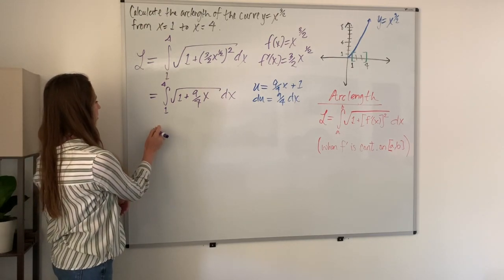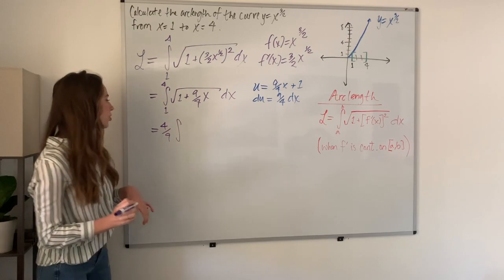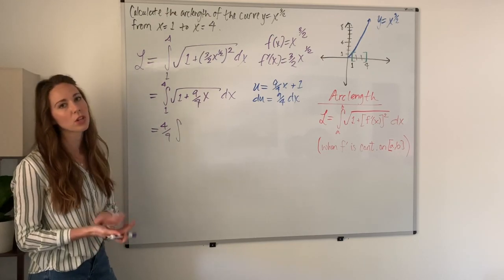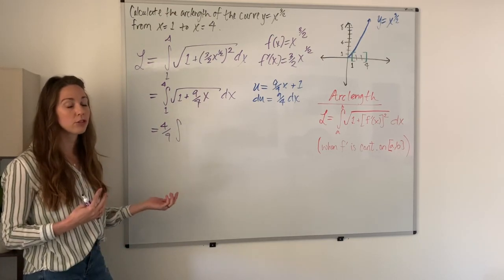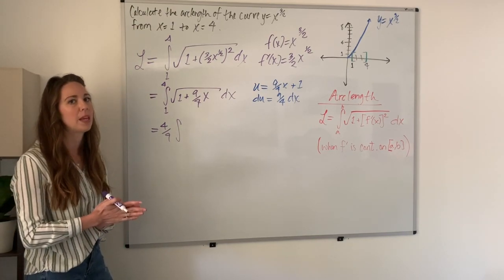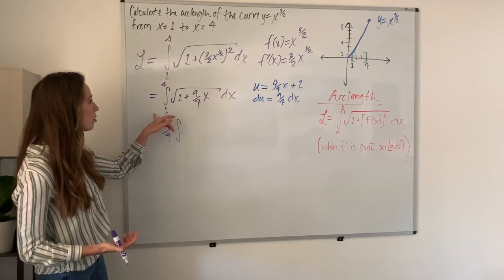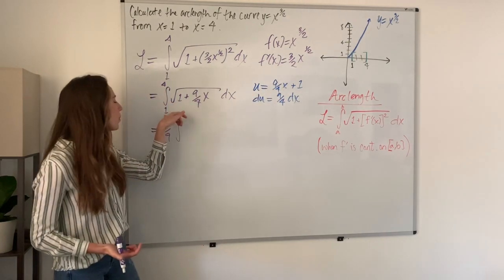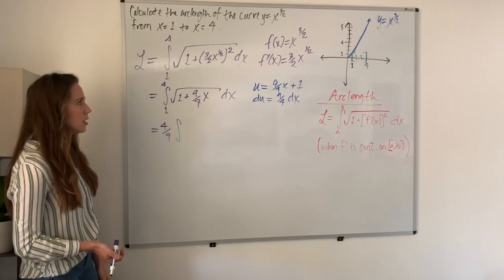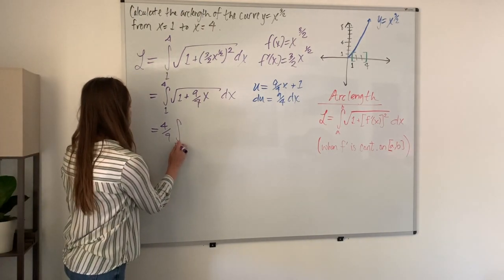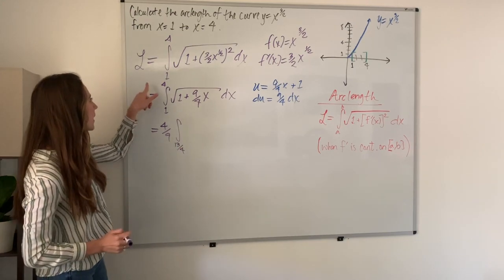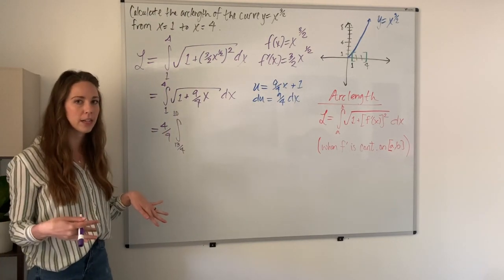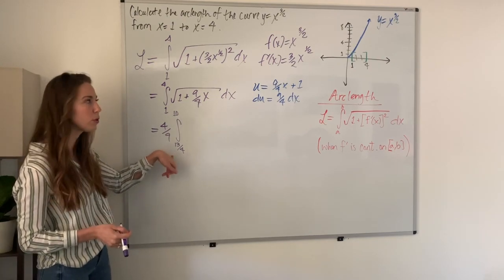This is really important: since we're working with a definite integral with bounds and we've done u substitution, we need to change our bounds. That's something that can easily mess you up if you're not careful. To do that, we're plugging in our bounds into our u substitution. We plug in 1 for x and get 9 fourths plus 1, which gives us 13 over 4. Then we plug in 4 for x, which gives us 9 plus 1, so that's 10. Our new bounds are from 13 over 4 to 10.